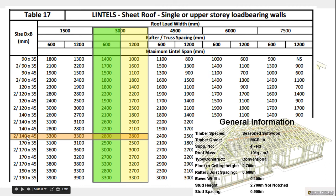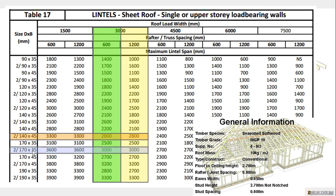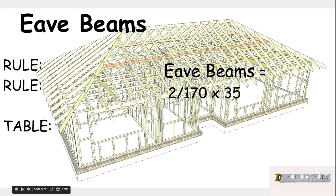Because it's a 45, that sparks my interest as far as efficiency goes. You'll find it's actually more efficient to use two 170x35s - we get a bit more span out of it, but there's less timber in two 170x35s than there is in 140x45s. So we're going to use two 170x35s for our eave or veranda beam.